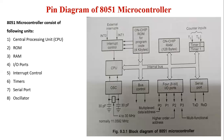The next unit is interrupt control. The 8051 supports both internal (software) and external (hardware) interrupts, and provides 5 sources of interrupts. The next unit is the timer. The 8051 supports two 16-bit timers or counters with multiple modes. In timer mode, they can be used to generate a specific delay; in counter mode, they can be used to count external pulses.